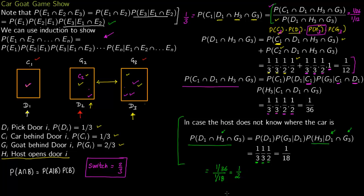So if the host does not know where the car is and is opening doors randomly, it does not make any sense to switch. If the host is opening the door randomly, he could even open the door with the car behind it. Switching provides no advantage when the host is uninformed. We must assume the host knows where the car is for switching to be beneficial.